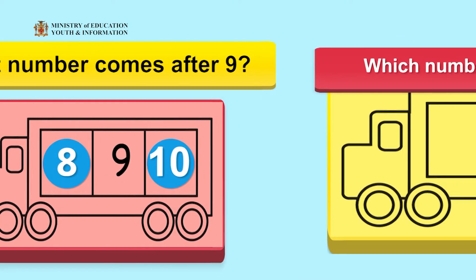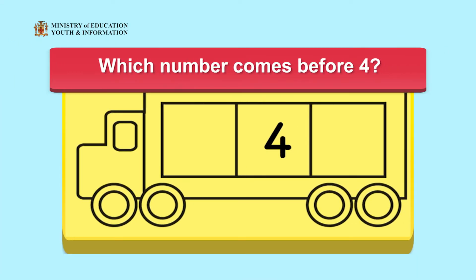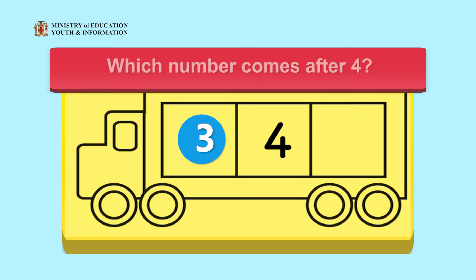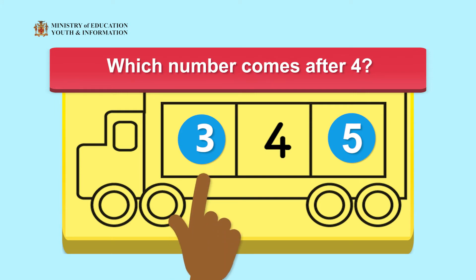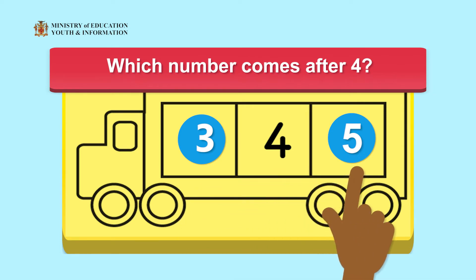Let us do another one. Help Michael determine which number comes just before 4 when counting by 1. Very good! The number 3. Now tell him which number comes exactly after the number 4 when counting by 1. Wow! The number 5. Let's count using all 3 numbers now. 3, 4, 5.